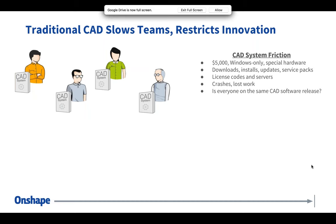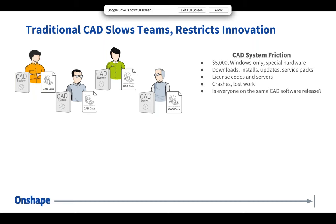Getting a new collaborator or vendor up to speed can take days before they can actually view your file and work with you. Traditional CAD restricts the environment you're working in and causes a lot of headaches. The main reason is that it's all built off of CAD files — in a traditional CAD application, you're saving individual files for parts, assemblies, and drawings, so everything is a file-based infrastructure that is not terribly conducive to collaboration.